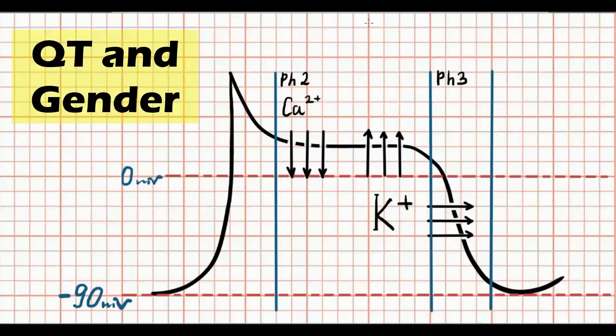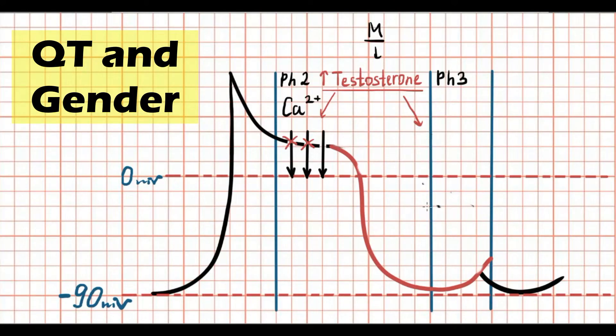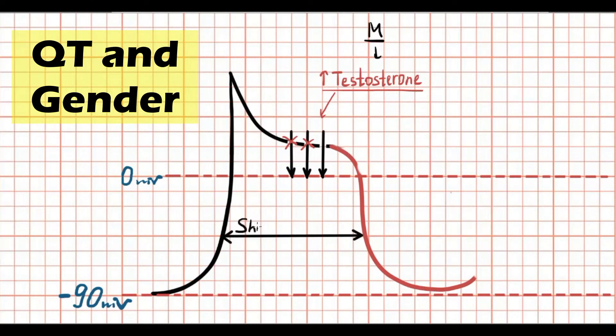The duration of QT depends on hormonal secretion. Therefore, it depends on gender. Males have greater concentration of testosterone. Testosterone decreases the calcium channel current and increases potassium channel current. So the membrane potential faster becomes more negative. That leads to decreasing widths of phase 2 and phase 3. Therefore, it makes the QT interval shorter.